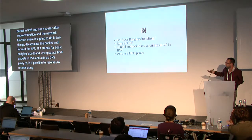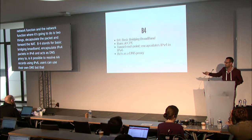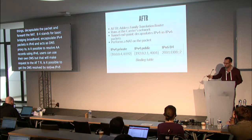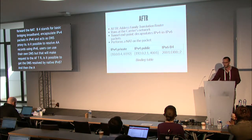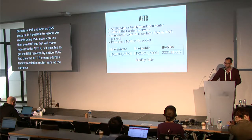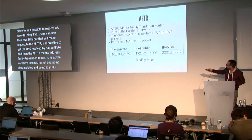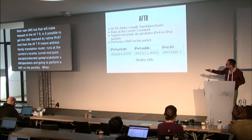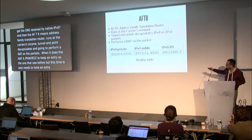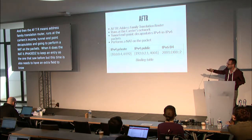Users could also use their own DNS, but to reduce stress on the AFTR it's also possible to get DNS resolved by native IPv6. The AFTR — Address Family Transition Router — runs at the carrier's network, is the other tunnel endpoint, decapsulates IPv4-in-IPv6 packets, and performs NAT on the packet. When it does the NAT it keeps an entry, but this time it also needs an extra field to know which CPE to send the returning packet back to.